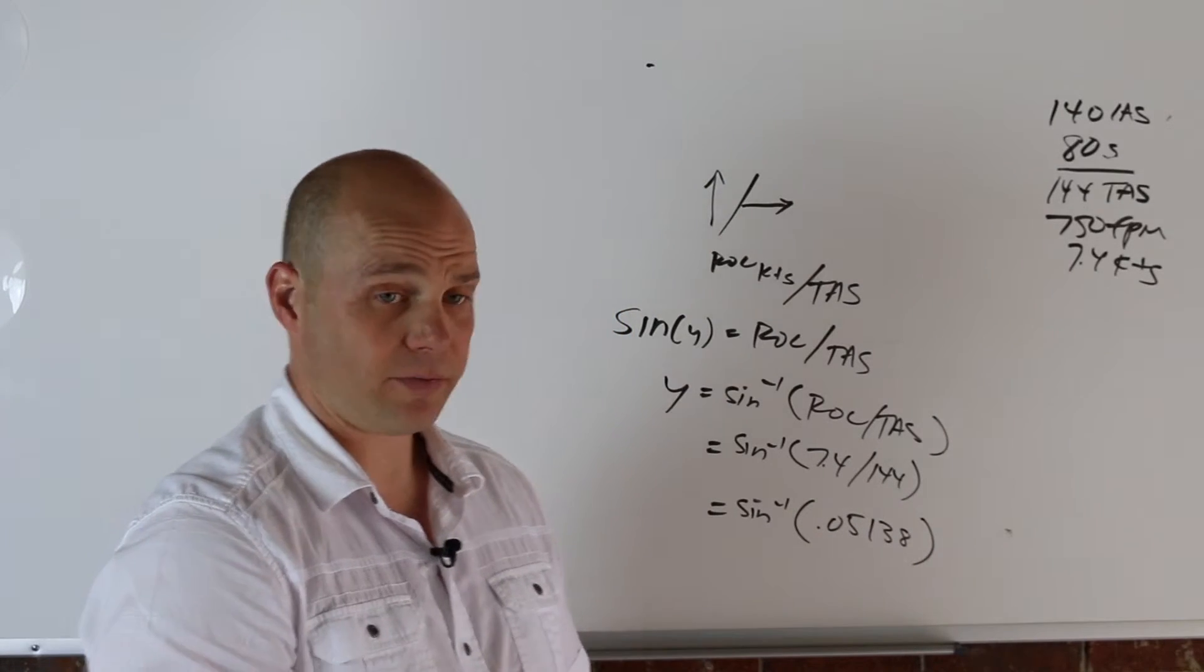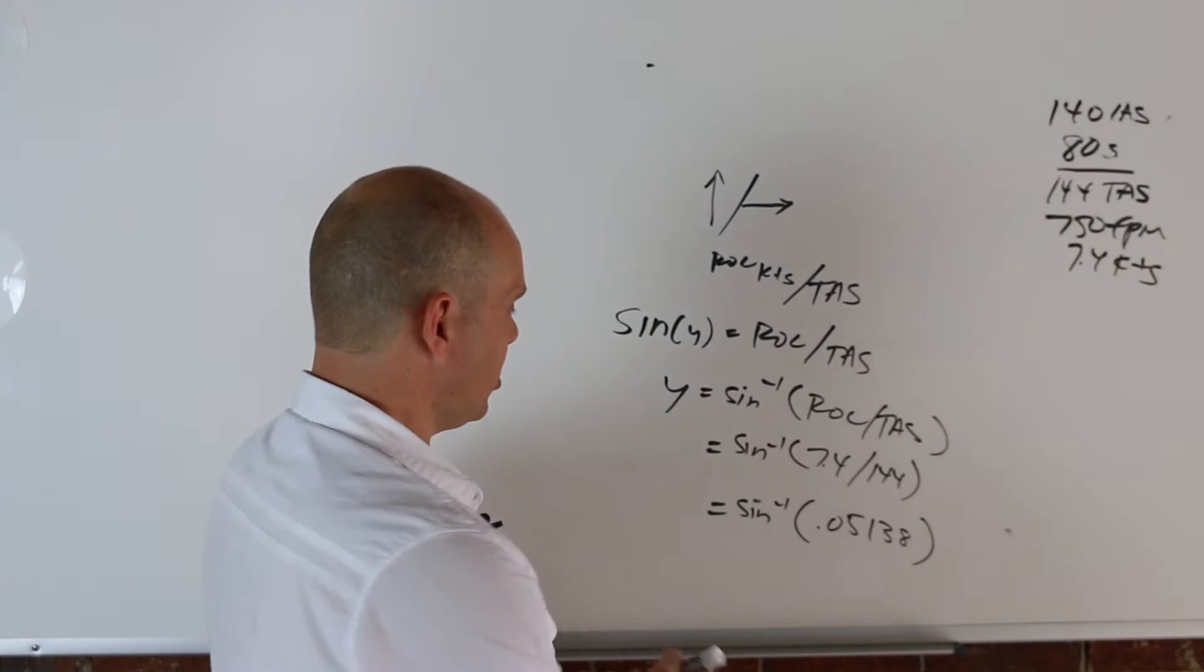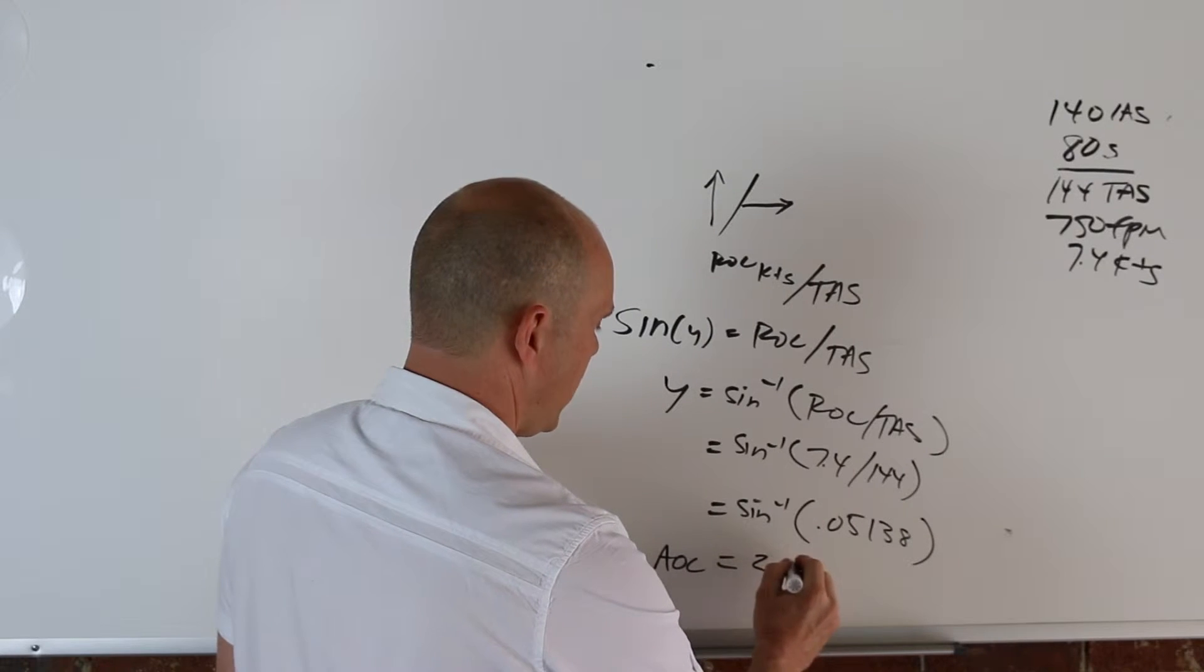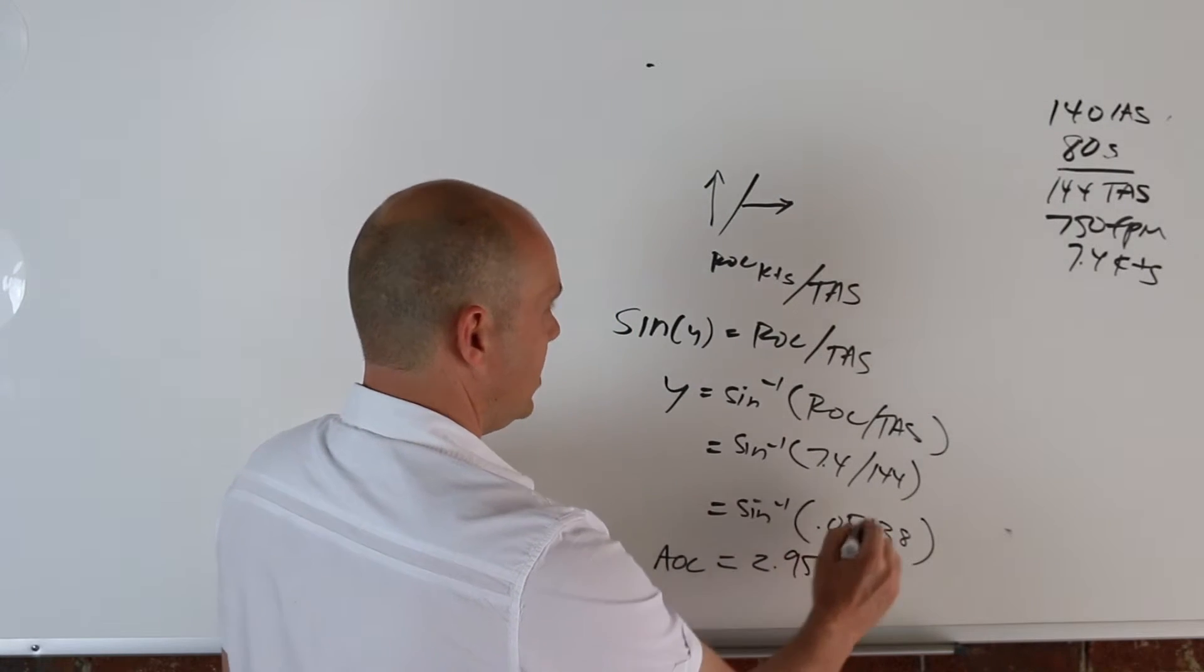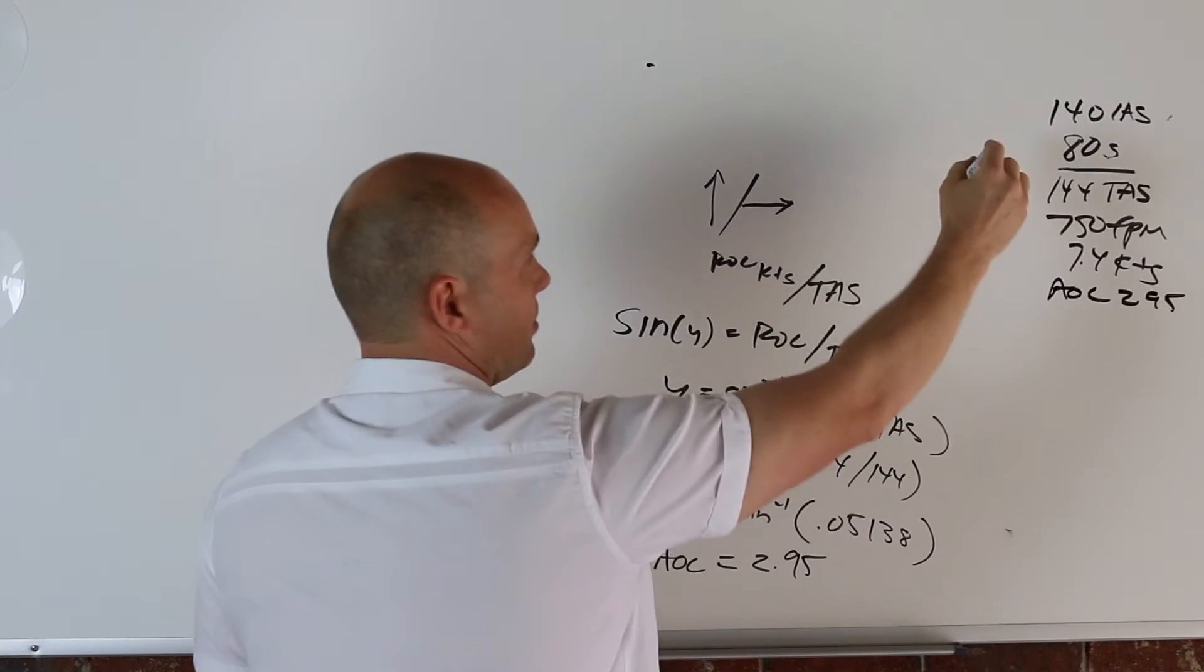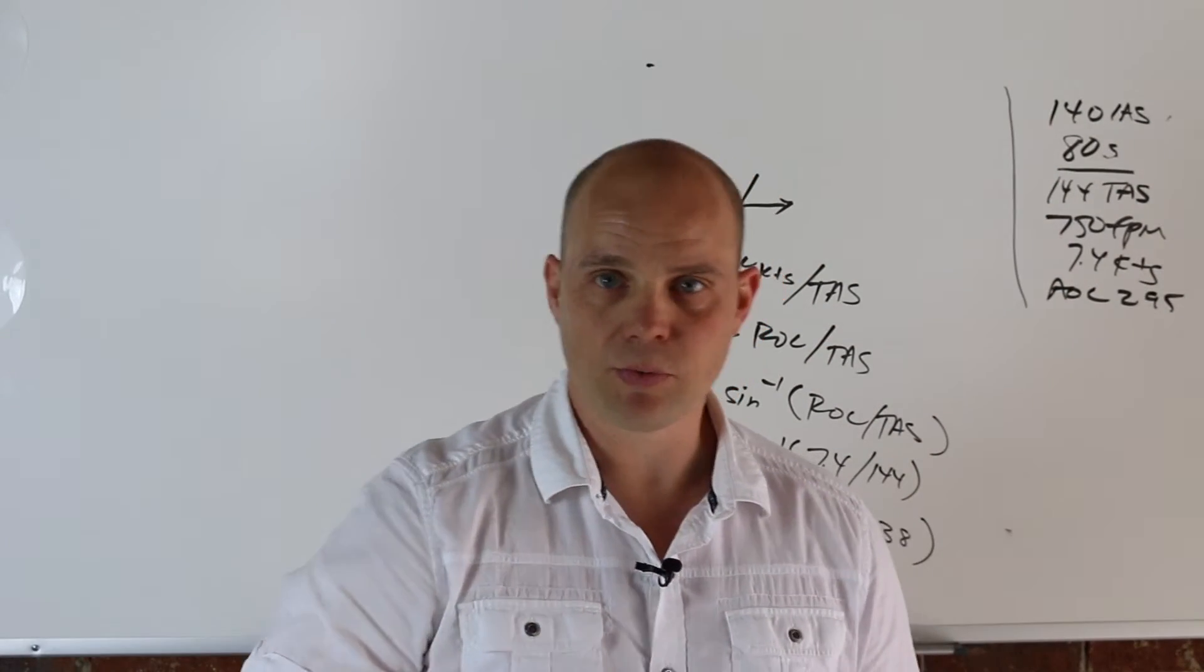And then just take your iPhone, flip it sideways, or your scientific calculator, second function, sine inverse, and you get a climb angle. Your angle of climb is going to be 2.95. So there's the first part of the table filled in. Now you just have to go through and do the rest.